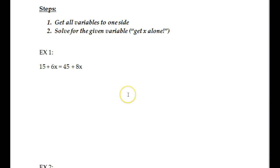Example 1: 15 plus 6x equals 45 plus 8x. If you notice, there are two parts — a part on the left side and a part on the right side. The goal is to get x equals something. The trick is to find out what that something is. You always want to first get all the variables to one side.